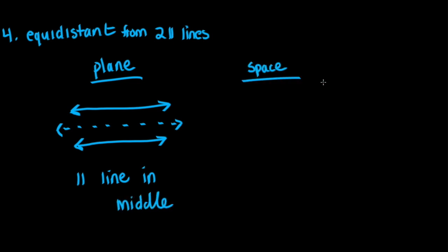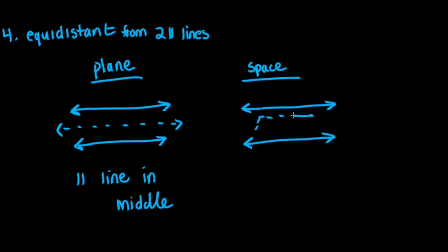Now if we're in space and we have two parallel lines, what would be the locus of points that are equidistant from these two lines? That, of course, would be a parallel plane in the middle. So our answer would be a parallel plane which is in the middle.